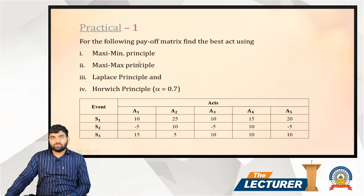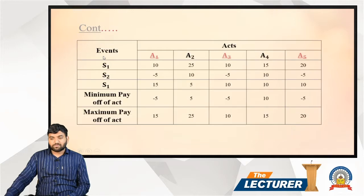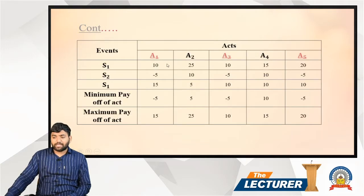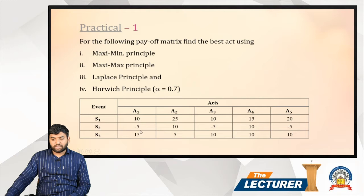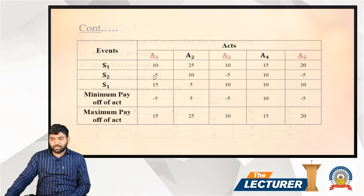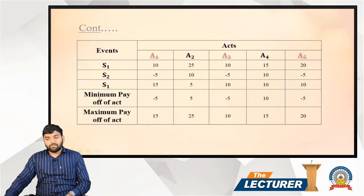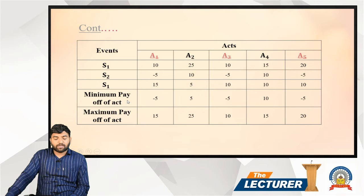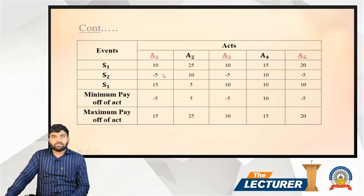The payoff values in the matrix include: minus 5, 10, 20, 5, 10, 5, 10, minus 5, and 10. We will now find the minimum payoff for each act — the minimum payoff of act a1, a2, a3, a4, and so on.